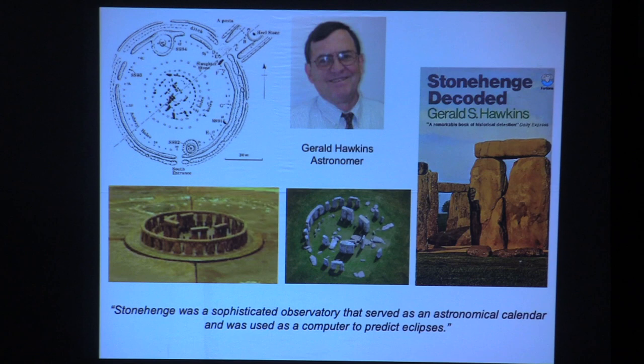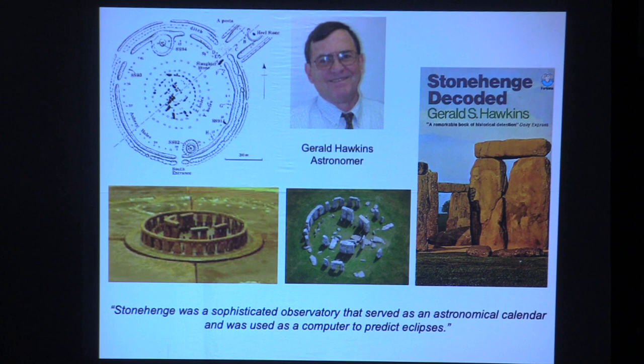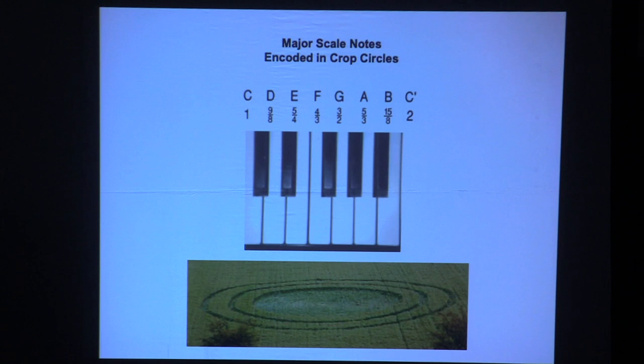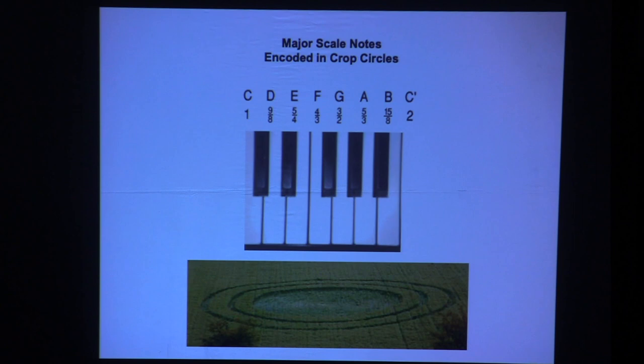Gerald Hawkins was head of the astronomy department at Boston University. He took an interest in Stonehenge and wrote Stonehenge Decoded, demonstrating that it was a sophisticated observatory serving as an astronomical calendar and used to predict eclipses. Then he decided to take an interest in crop circles and did a simple thing: compare their sizes. When he compared them to each other, he noticed certain ratios. Because his wife played the harp, he was aware that the ratios he discovered corresponded exactly to the notes of a major scale.